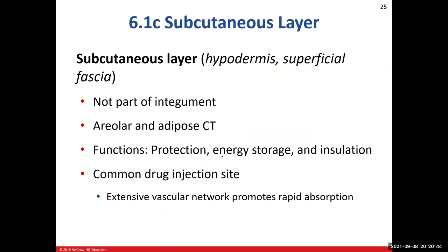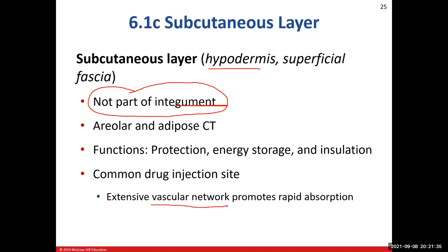Now let's talk about the subcutaneous layer — we also call this the hypodermis or superficial fascia. This is a great true-false question: this layer is not part of the integument — never was, never will be. It just sits below, or deep to, the integument. The two types of connective tissue present are areolar connective tissue and adipose connective tissue — both of those are loose connective tissue.